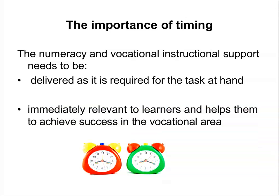Timing is important. The numeracy and vocational instructional support needs to be delivered as it is required for the task at hand — immediately relevant to learners — and helps them achieve success in the vocational area. Doing things out of context means learners don't always see the relevance and won't engage. So it's keeping it related to the task at hand.